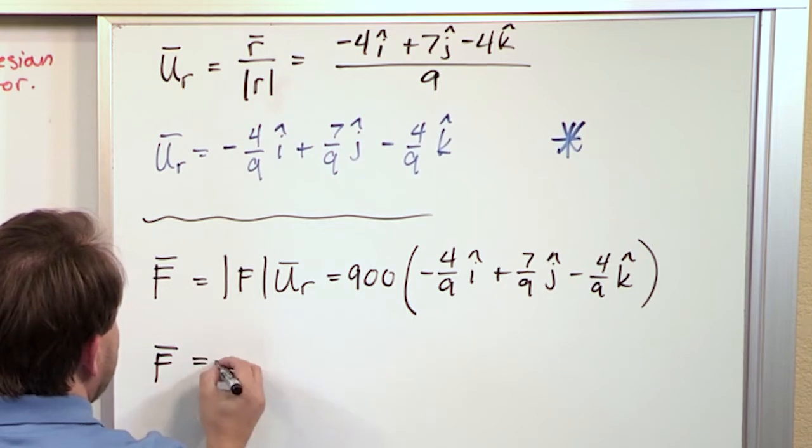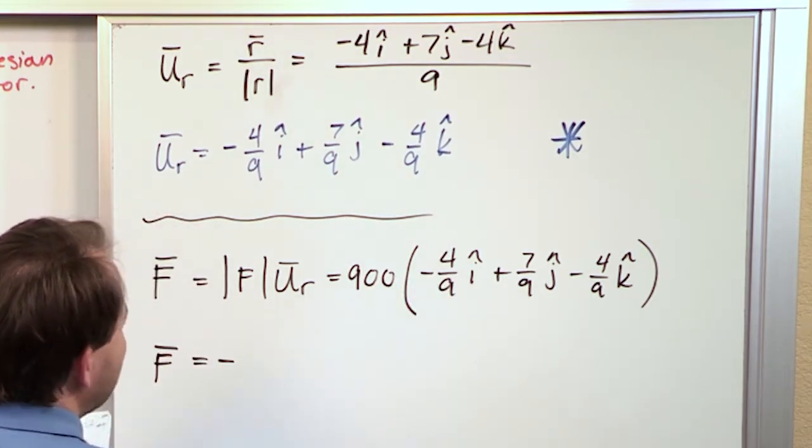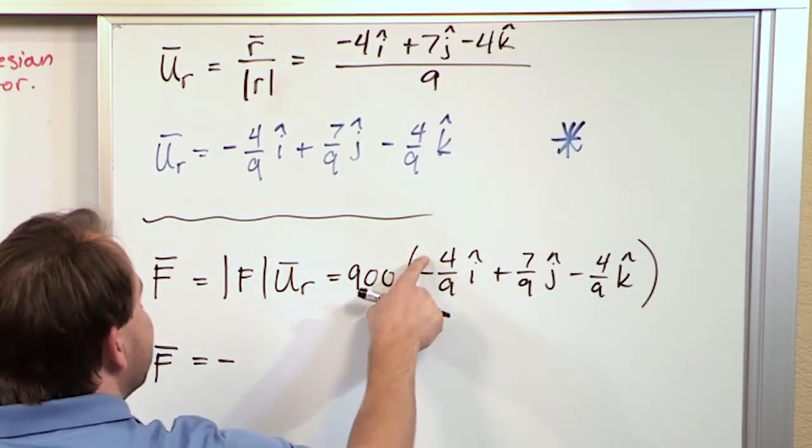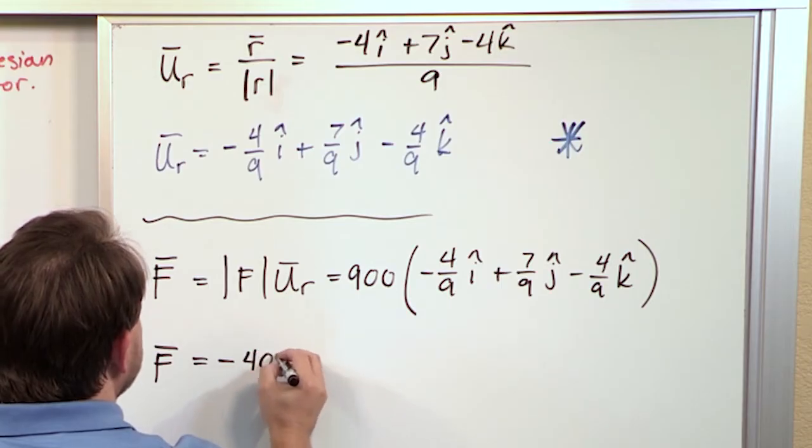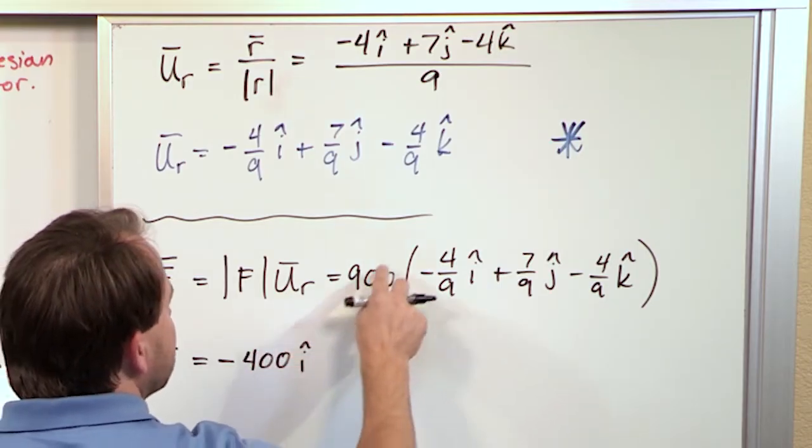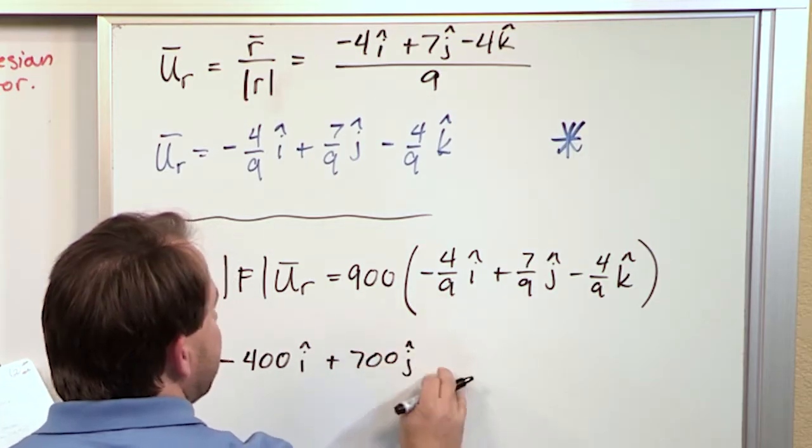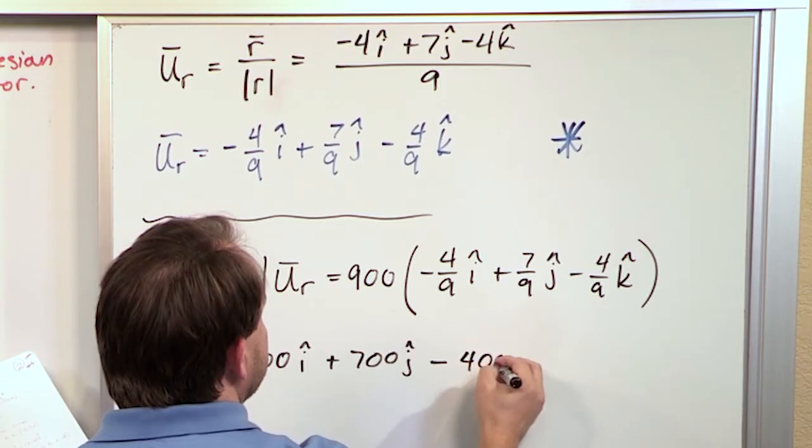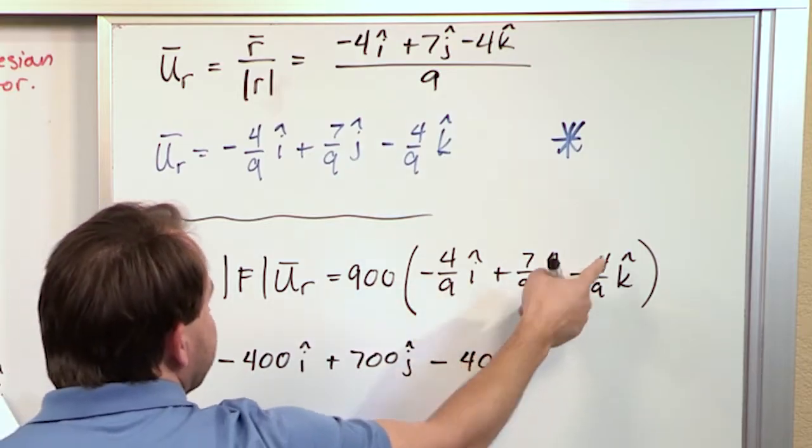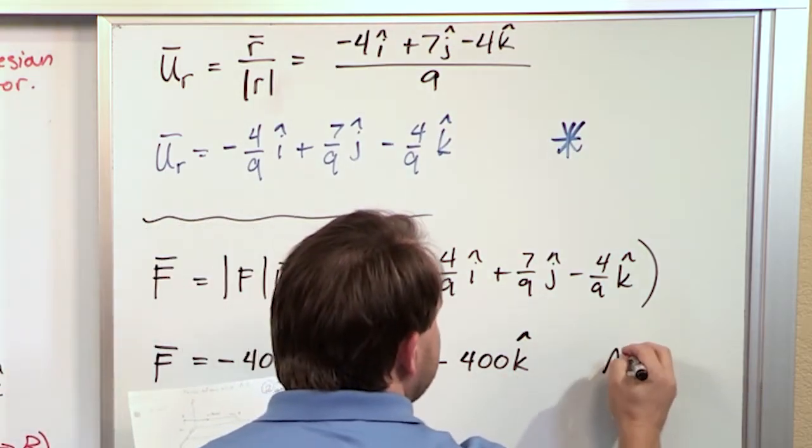So, here, what I'm going to have, the 900 gets multiplied here, 900 divided by 9 gives me 100 times the 4 in the i direction. Similarly, when I go here, I'm going to get 700 in the j direction. Similarly, when I go here, it would be negative 400 in the k direction. This divided by this gives me 100 times the 4 gives me 400. The unit of this is just newtons.